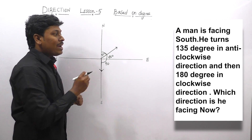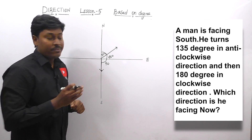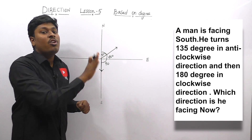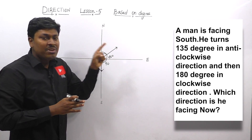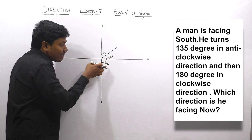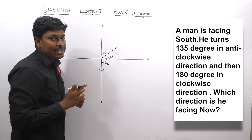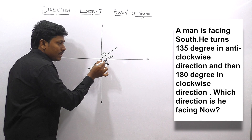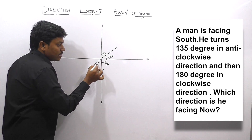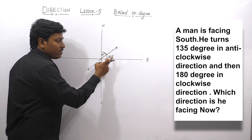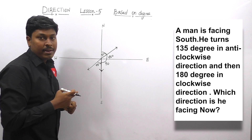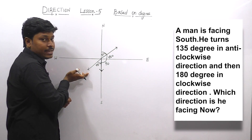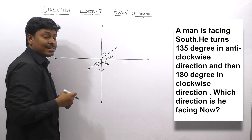Next point: and then 180° in clockwise direction. From here, the man is turning 180° in clockwise direction. We know that this is clockwise direction. He is turning 180°, so 180° will be on this side because this is 45, this is 90, and this is 45. So we can say 45 plus 45 is 90, and 90 plus 90 is 180. From here, the man turns clockwise direction 180°, and finally the man is facing in this direction.